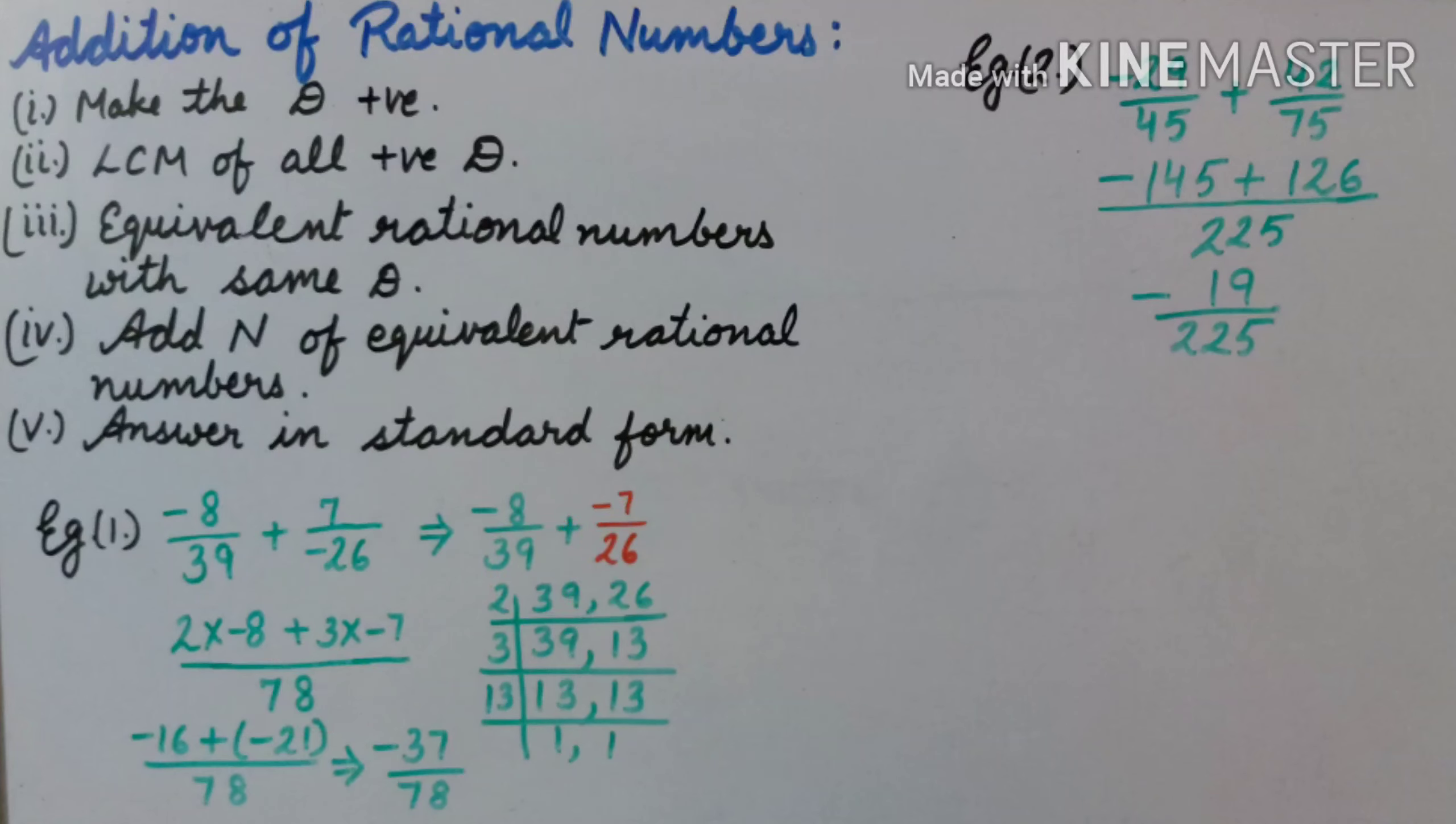For finding numerator of equivalent rational number, we will see a trick here. As we can see, prime factors of 78 are 2 into 3 into 13. We will ignore the factors of denominator, that is 39. We can ignore 3 into 13 as the factors of 39. So 2 is left over.